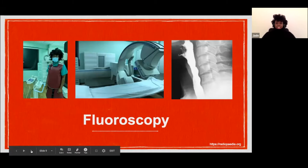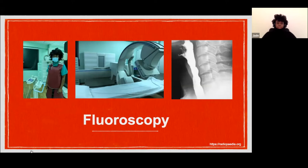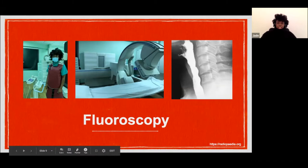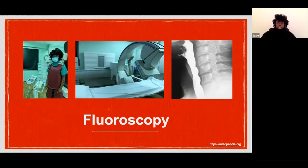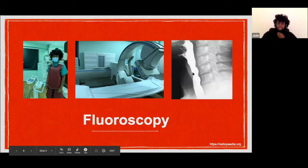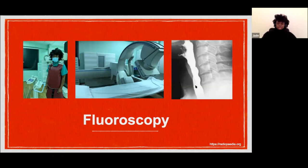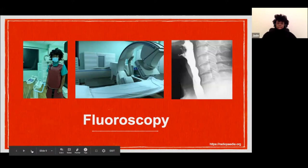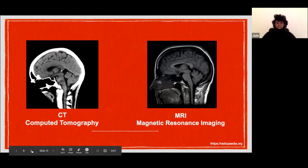Fluoroscopy — I didn't know what it was until I started radiology. There's a machine that can direct where x-rays are produced and detected, with the patient lying between. We take lots of x-rays over time to see how different body systems work. If a patient has difficulty swallowing, we get them to drink a dye and watch it travel down the oesophagus to see if anything is blocking it.